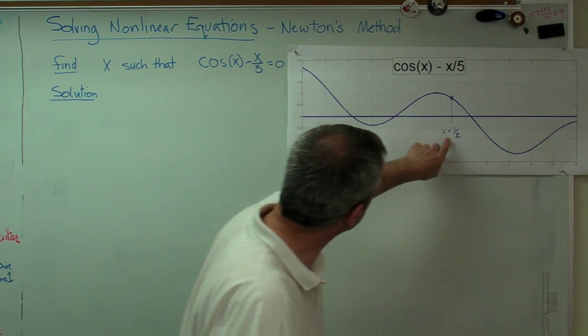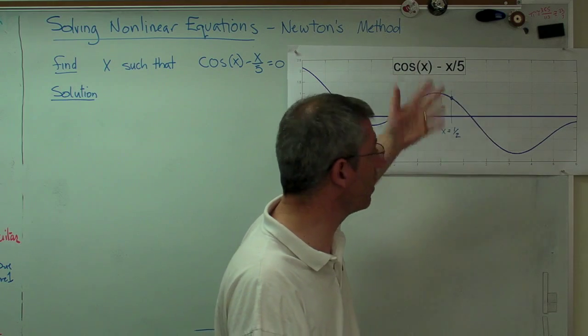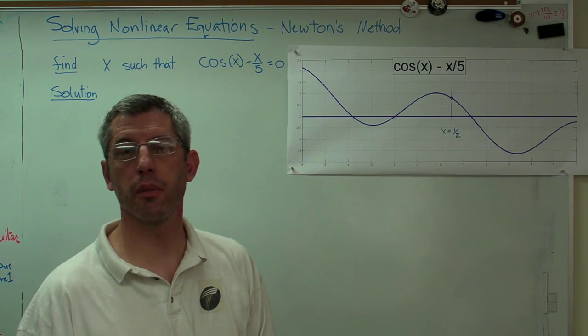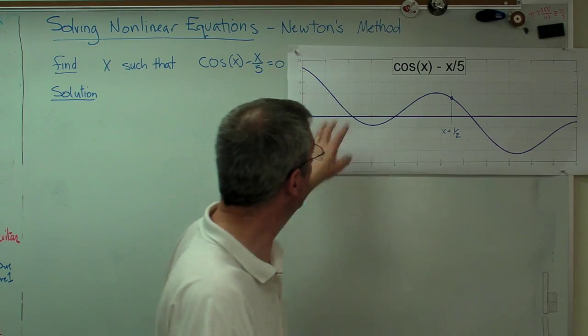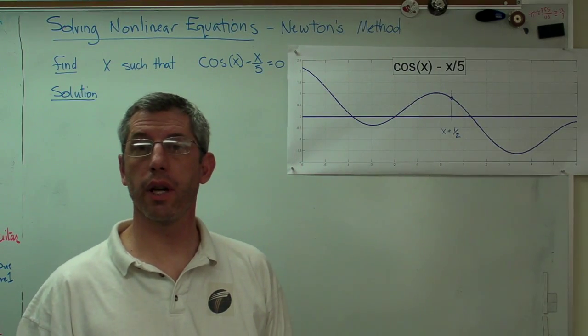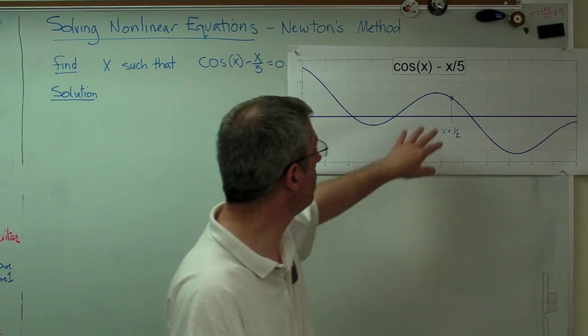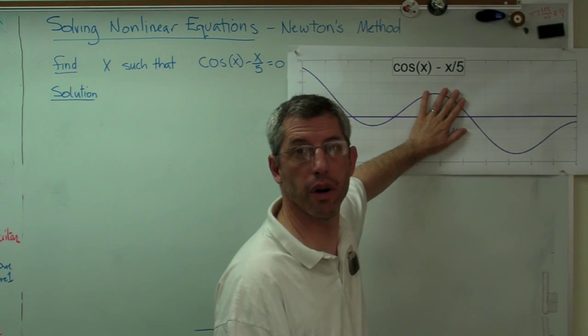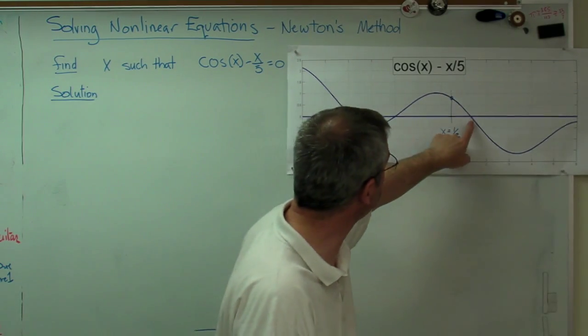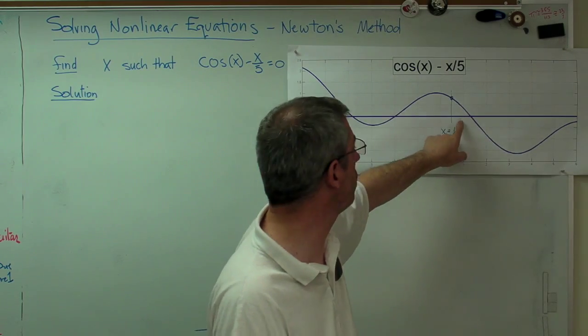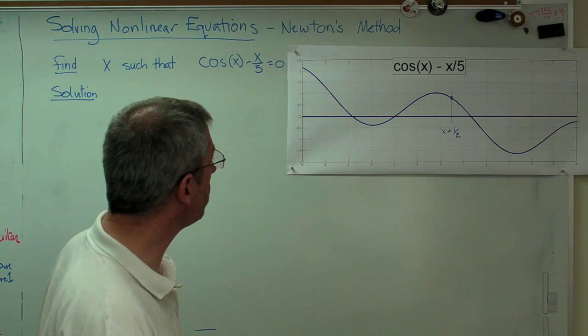Now the process here is I'm going to start at x equals a half. Why a half? Who knows? It just looked like a good enough answer or good enough starting point. Many numerical methods like this require that you give it an initial guess. The algorithm isn't smart enough to guess for you. So typically it'll ask you for a guess. This is one of those kinds of algorithms and my initial guess is one half. Now I know that's not the right answer because I'm kind of cheating. I drew a picture of it here.